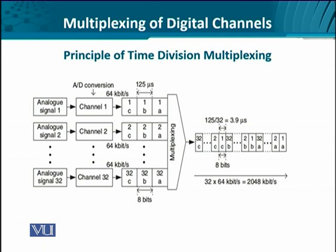Although we are going to discuss it later, you can remember that this 2.048 Mbps stream is called an E1 stream — it is the European standard for digital transmission.